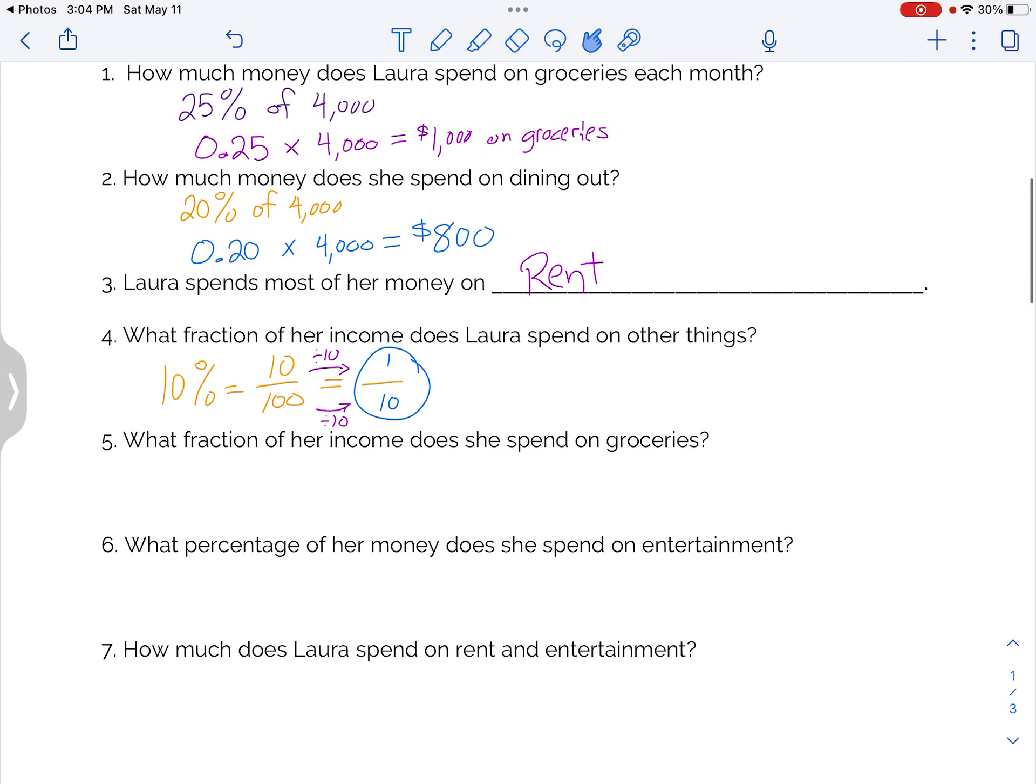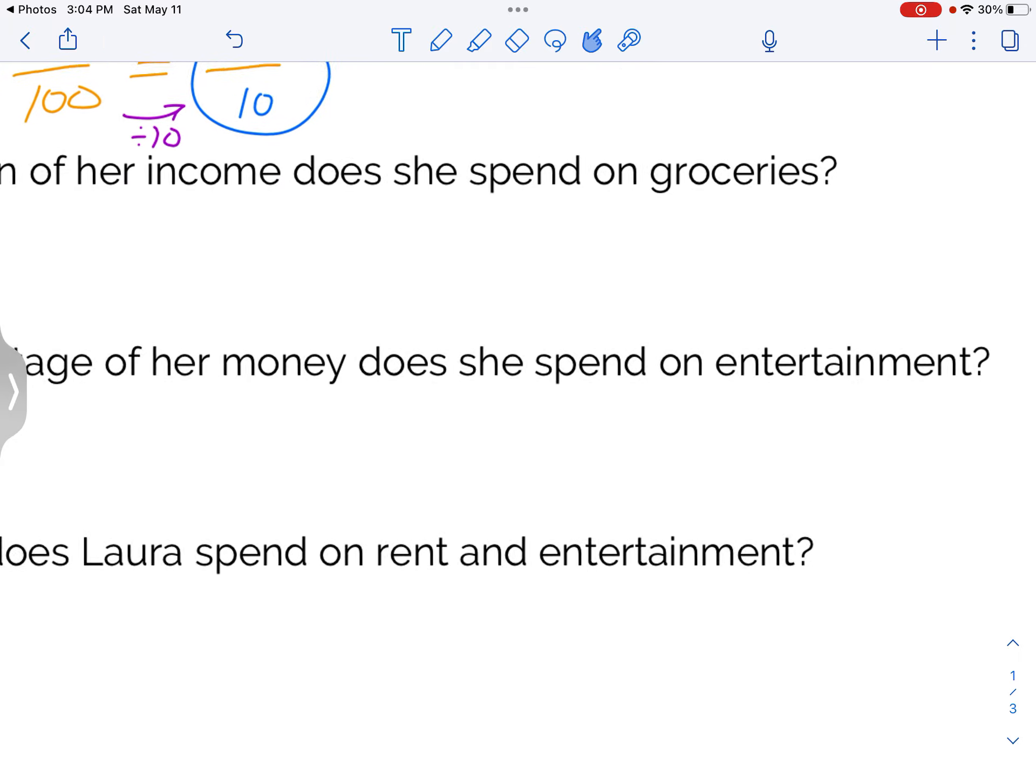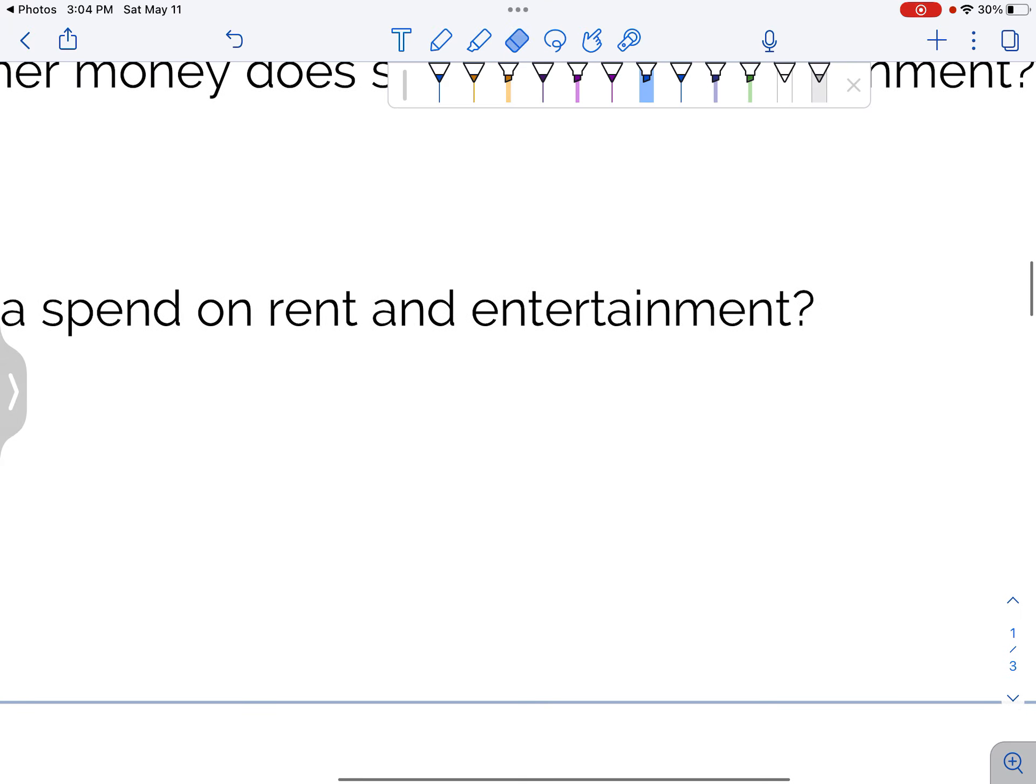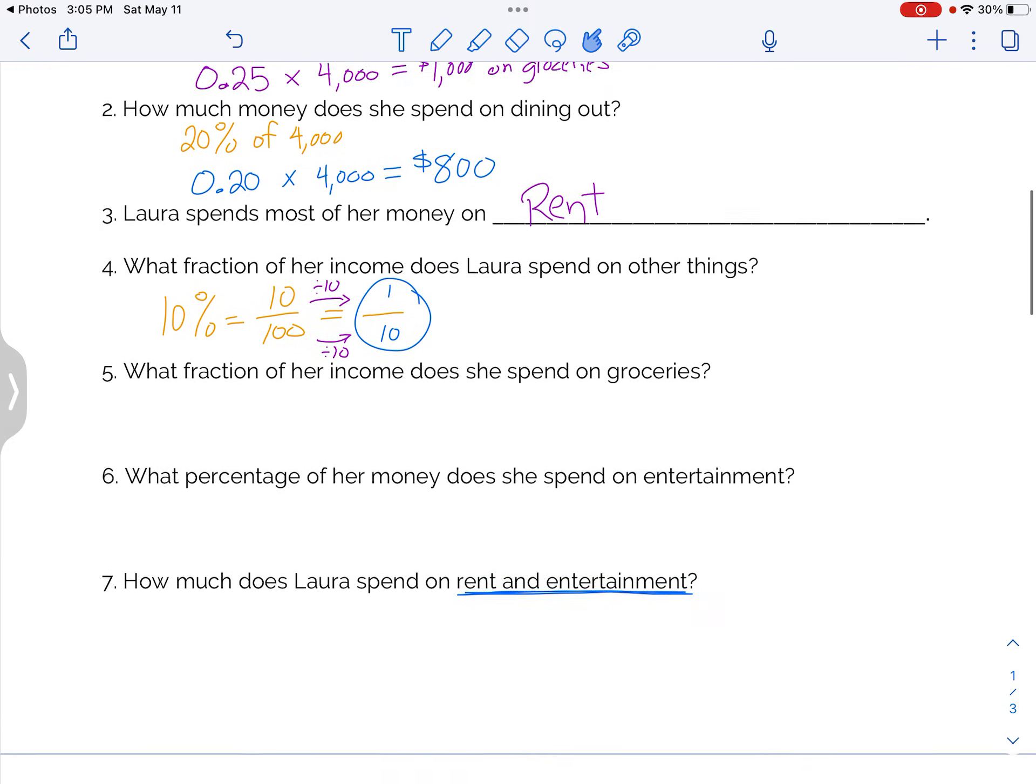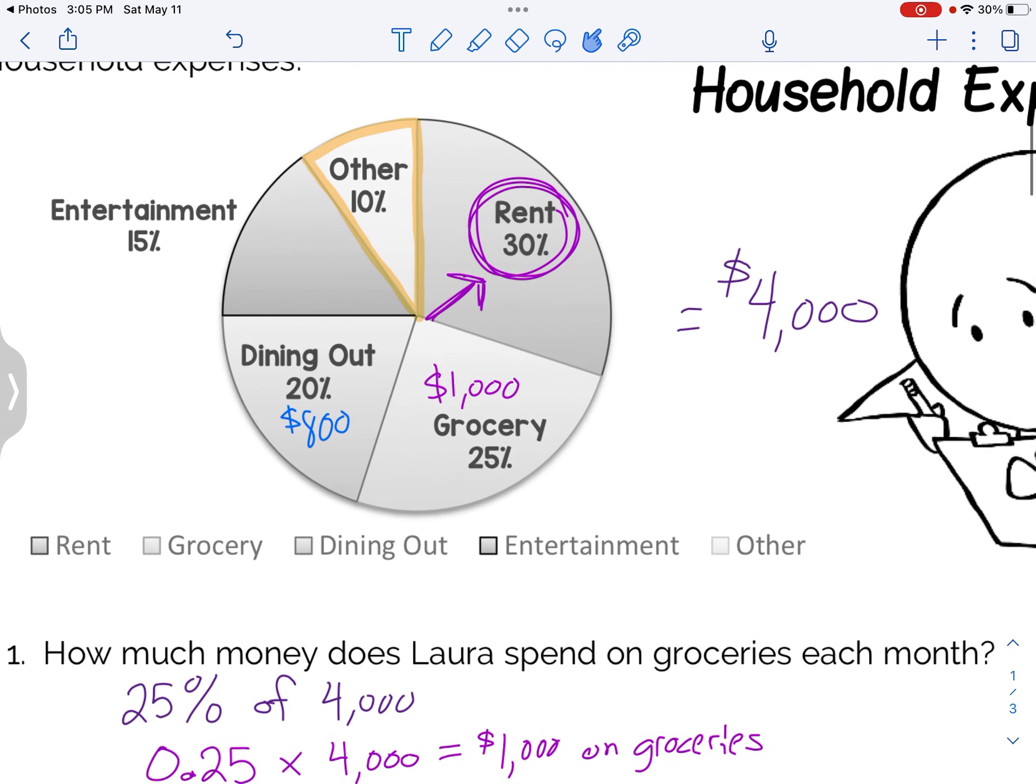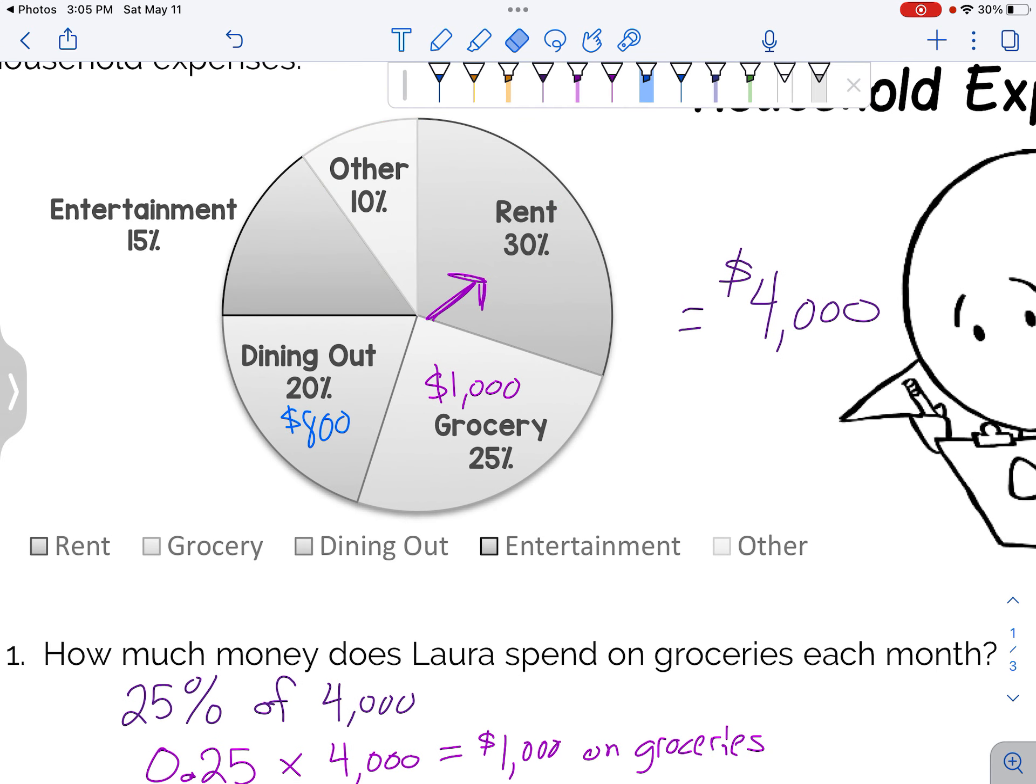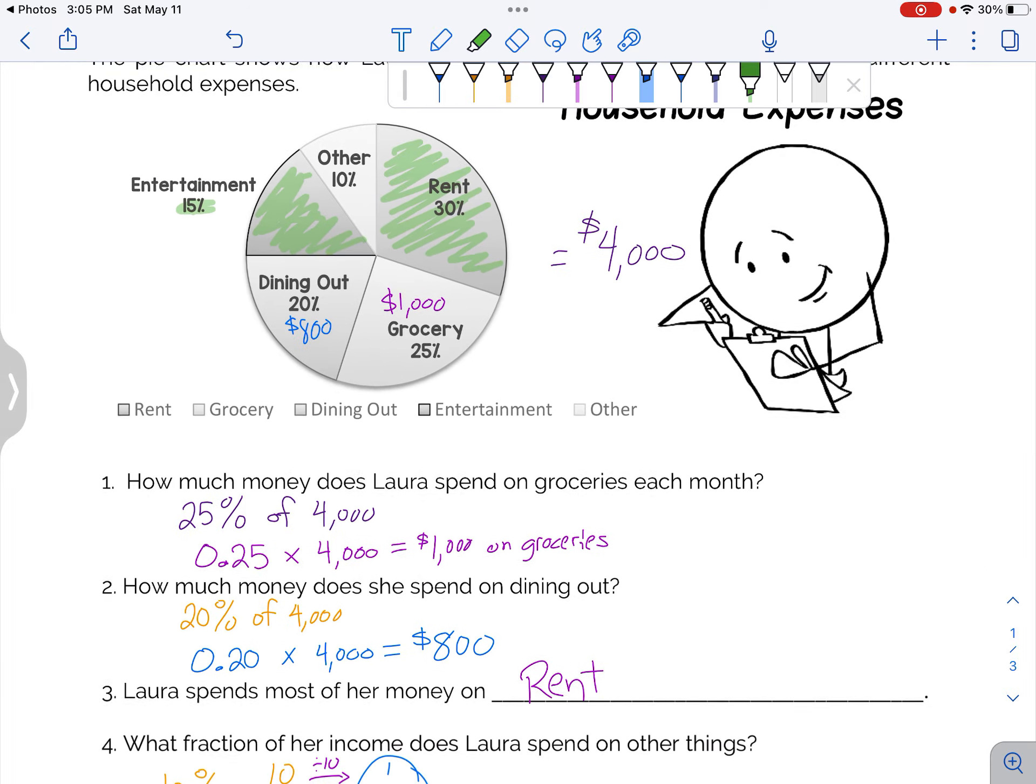The last thing that I want to talk about before I say you need to finish is number 7. How much does Laura spend on rent and entertainment? That means you have to put those two sections together, those two sectors. Let's go back and look at it. Rent and entertainment. So we're looking at, let me highlight them green for you, this and this together. So rent is 30%, entertainment is 15%.